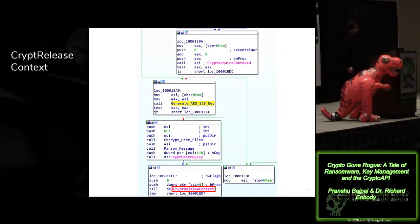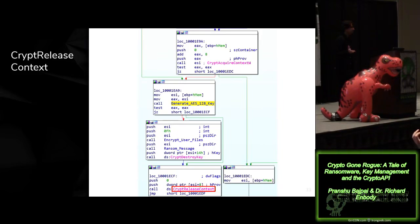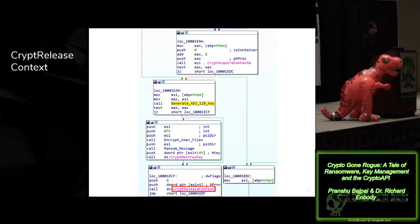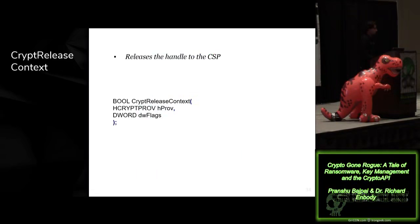Finally, you have CryptReleaseContext — that's the final step. It is the opposite of what CryptAcquireContext was doing in the beginning. CryptAcquireContext made sure we had the handle to the CSP so we could make all of these calls. CryptReleaseContext does the exact opposite — it releases the handle to the CSP so you can no longer make calls to the CSP. This is the final step that any application accessing crypto functionality using the crypto API on Windows would need to do. You just provide the handle to the CSP and it will release it.